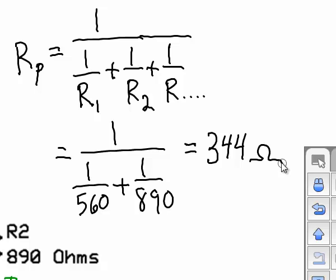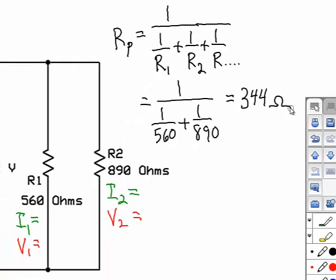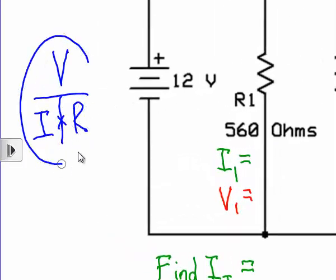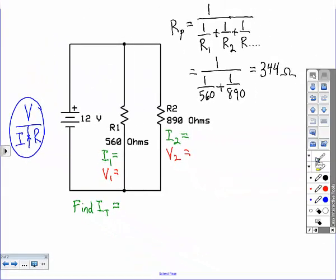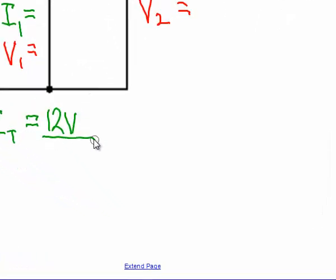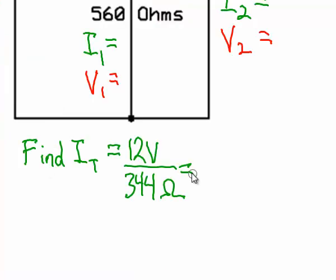Now that we have the total resistance, we can use Ohm's law to find current. Remember Ohm's law is voltage equals current times resistance, V over IR. Since it's current that we're missing, we can cover that up, and it tells us it's voltage divided by resistance. So to find the current, we take 12 volts, our total voltage, divide that by 344 ohms, and we get 34.88 milliamps. We'll round that to 34.9 milliamps.